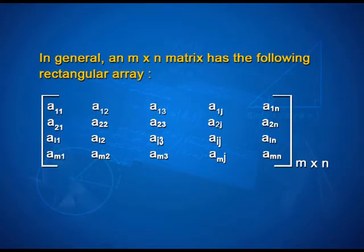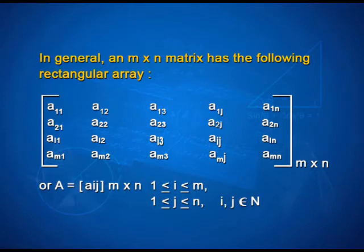In general, an m by n matrix has the following rectangular array: a11, a12, a13 and so on a1j and a1n. In the second row a21, a22, a23, a2j and a2n will be the elements. Coming down to ai1, ai2, ai3, aij and ain. And in the last row am1, am2, am3, amj and last element comes out to be amn. This is a matrix of order m by n or A = [aij] of order m by n, where i lies between 1 and m and j lies between 1 and n, where i and j belong to natural numbers.